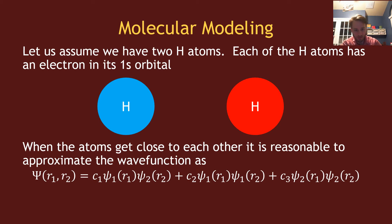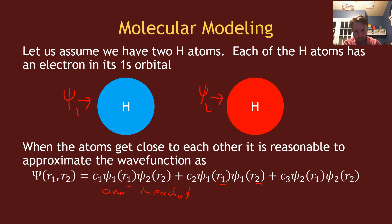For example, the total wave function for the hydrogen dimer can be written as some combination of psi one, related to the left hydrogen, and psi two, related to the right hydrogen. So electron one and electron two are in psi one, or they are both in psi two — one electron in each atom.